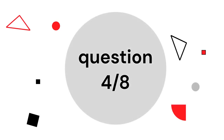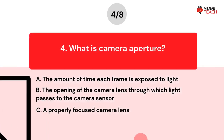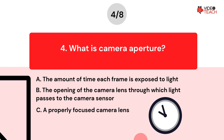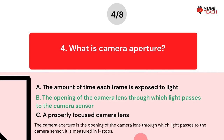Question number four. What is camera aperture? Option A: The amount of time each frame is exposed to light. Option B: The opening of the camera lens through which light passes to the camera sensor. Option C: A properly focused camera lens. The correct answer is B. The camera aperture is the opening of the camera lens through which light passes to the camera sensor. It is measured in F stops.